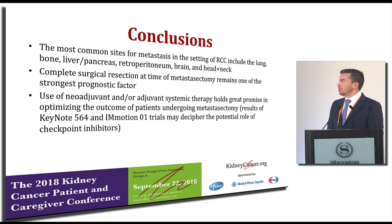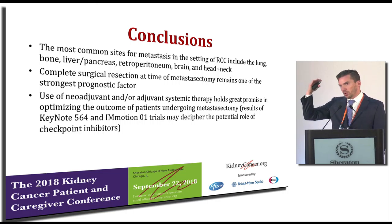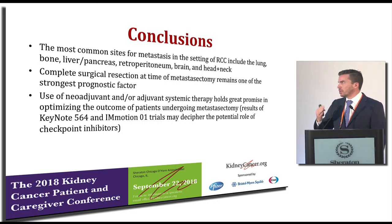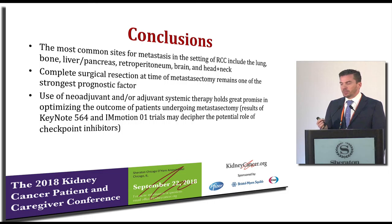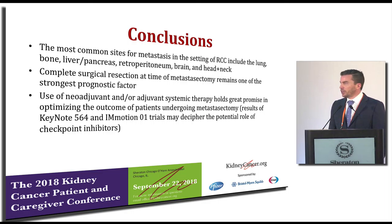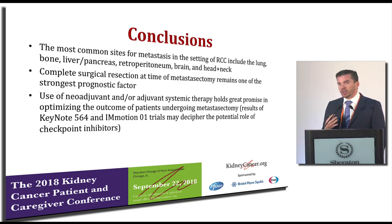In conclusion, the most common sites of kidney cancer metastasis are the lungs, bone, liver, pancreas, retroperitoneum, brain, and head and neck. Complete surgical resection is really the essential component of this type of treatment. Some of the neoadjuvant and adjuvant trials are very promising — particularly adjuvant trials following metastasectomy. Keynote 564 and EMOTION 010 may help us understand whether checkpoint inhibitors and immune modulators are important in these treatment combinations.